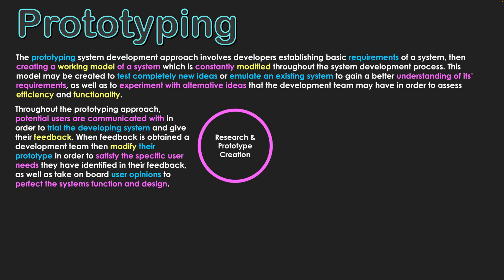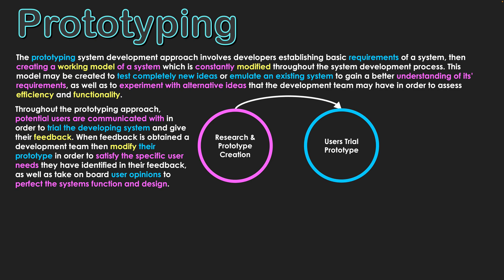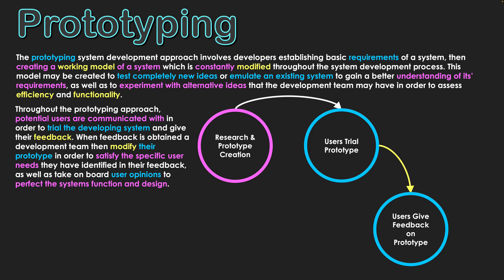What this looks like in practice: first we research and find our initial requirements, then we generate some sort of prototype. Next we have the users trial the prototype — they give it a go, see how it works, and try it out while we observe. Then we get the users to give us feedback on the prototype, whether through face-to-face interviews, surveys, or a questionnaire, to see what they think about the system.